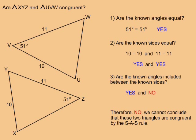In this example, are triangle XYZ and triangle UVW congruent? Question 1: are the known angles equal? Yes, both triangles have a 51 degree angle.